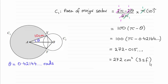So what I did was we had the angle theta here from the previous example, and it turned out to be 0.42144 and so on radians.